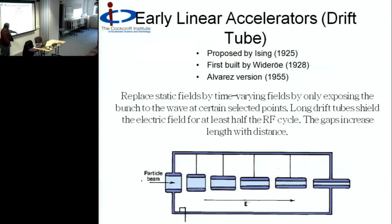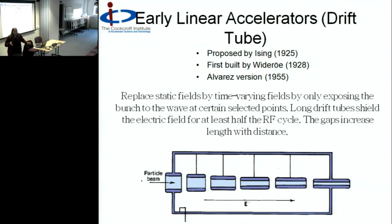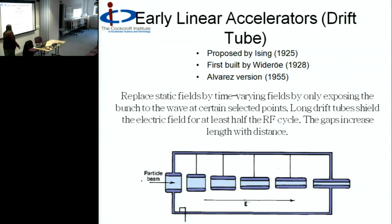As you notice, the gaps increase with distance, because the velocity of the particles increases as they are accelerated. So at the far end the drift spaces are very long, and at the starting end the drift spaces are very short because the particles aren't traveling very fast. This is a system that still works very well for heavy ions and high current proton machines today. It's a very simple RF system. I'm not going to talk a lot about drift tube linacs in this lecture - you'll see them next year in the advanced lectures.